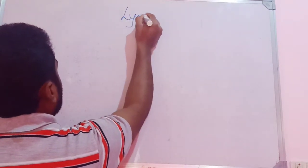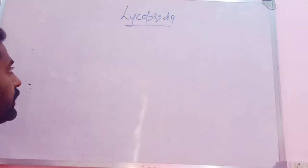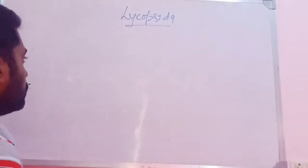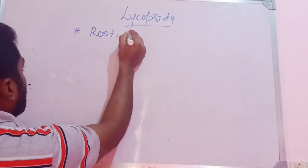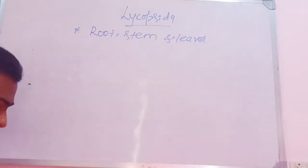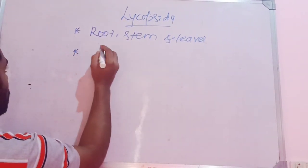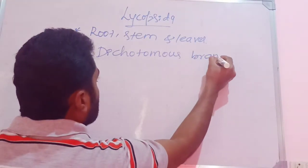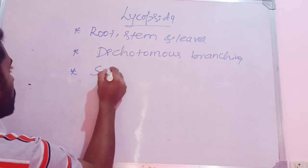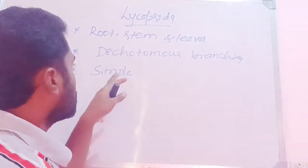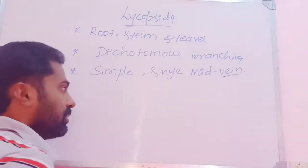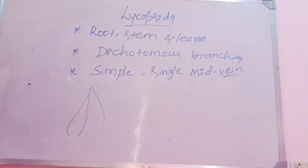The next group is Lycopsida. Compared to Psilotopsida, Lycopsida members are slightly more advanced. The plant body is differentiated into root, stem, and leaves. The stem and root show dichotomous branching. Leaves are simple — not compound like in ferns — with a single unbranched midvein. The leaves are spirally arranged on the stem, or sometimes in irregular whorls.